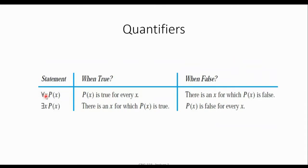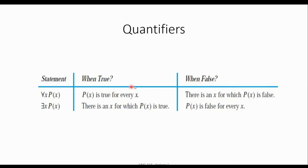Here is another quantifier: 'there exists one x which holds for this function.' These ones we call statements. When is this statement true? When for all x's this is true. But if you find even one x which does not hold for this statement then it is false. Compare it with the existential quantifier: we say there is an x for which P(x) is true — even if you find one such x this statement is true. When is the existential quantifier false? When for all x's inside this function it is false.